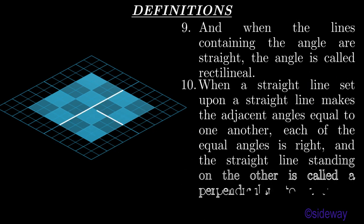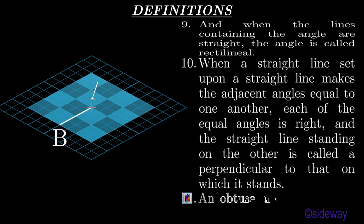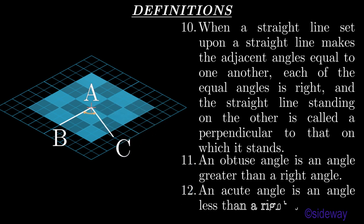When a straight line set upon a straight line makes the adjacent angles equal to one another, each of the equal angles is called a right angle, and the straight line standing on the other is called a perpendicular to that on which it stands. An obtuse angle is an angle greater than a right angle; an acute angle is an angle less than a right angle.